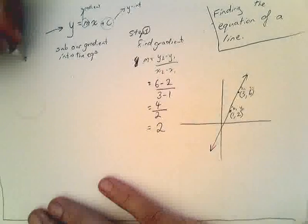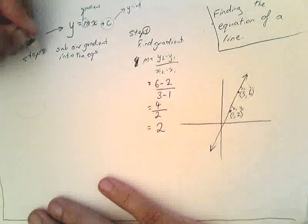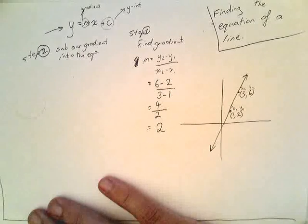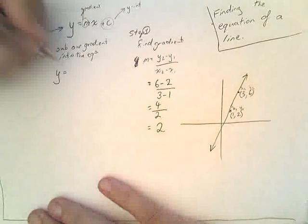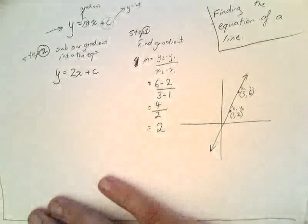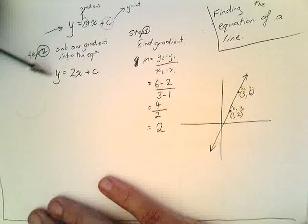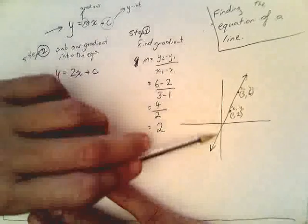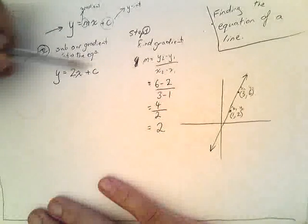I guess that's step two. So, y equals 2x plus c. We're very, very close to having the equation of this line. What we're missing is this c value.